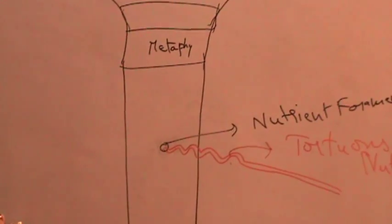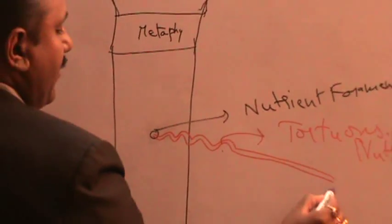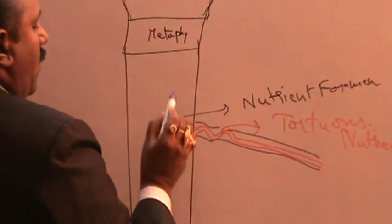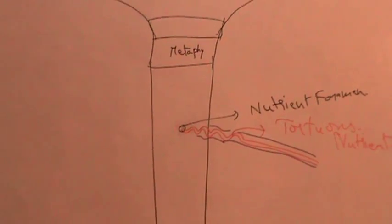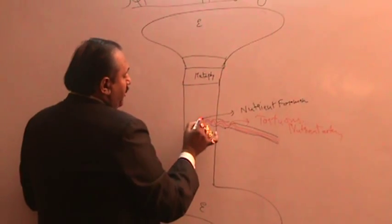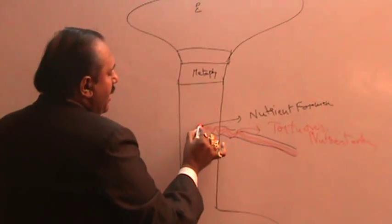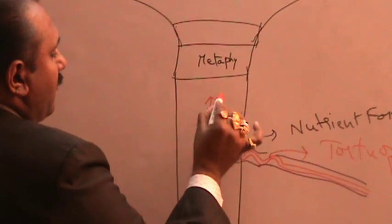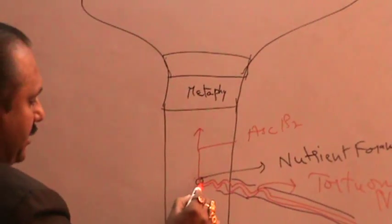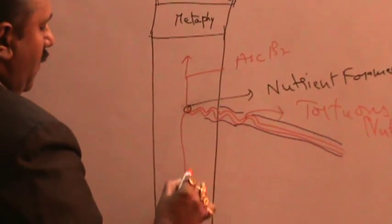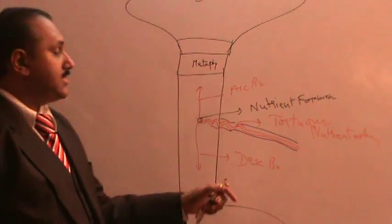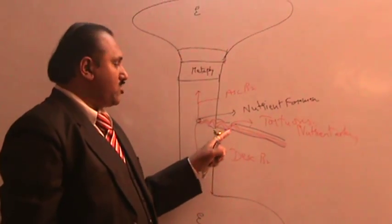The nutrient artery enters into the shaft of the long bone. It is sometimes associated with one or two veins running alongside it. After entering through the nutrient foramen, the artery gives one branch going up — called the ascending branch — and one branch going down — called the descending branch.